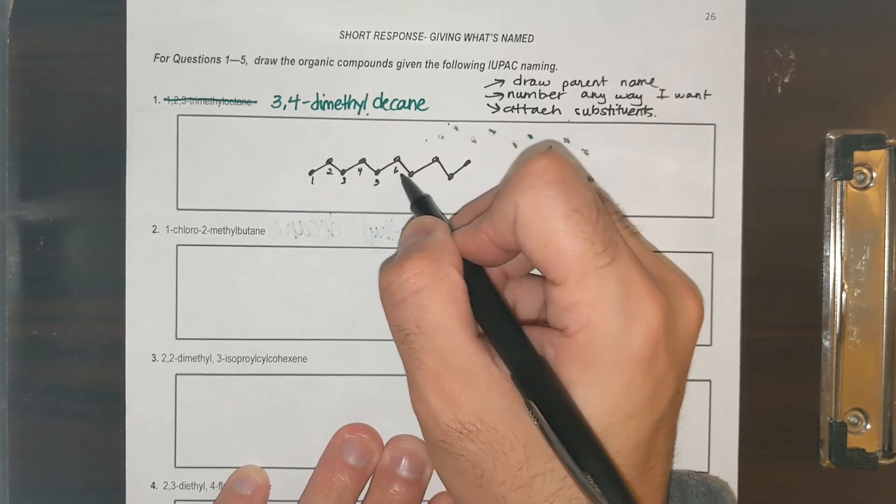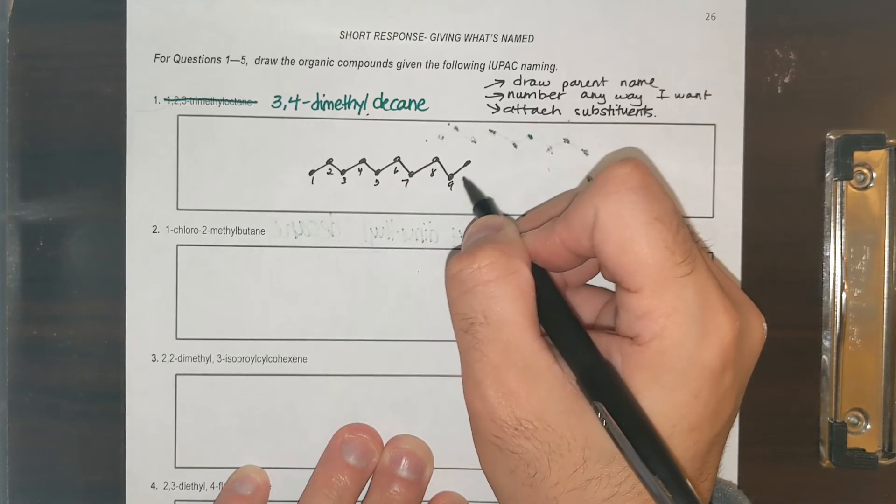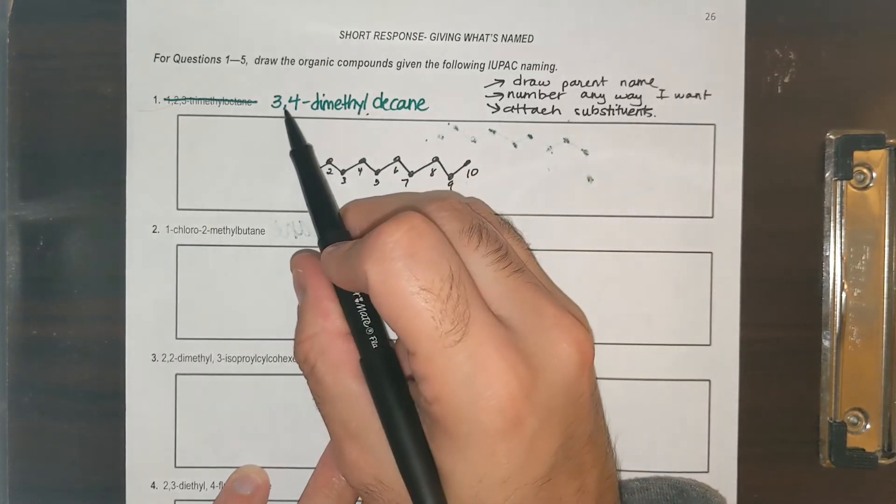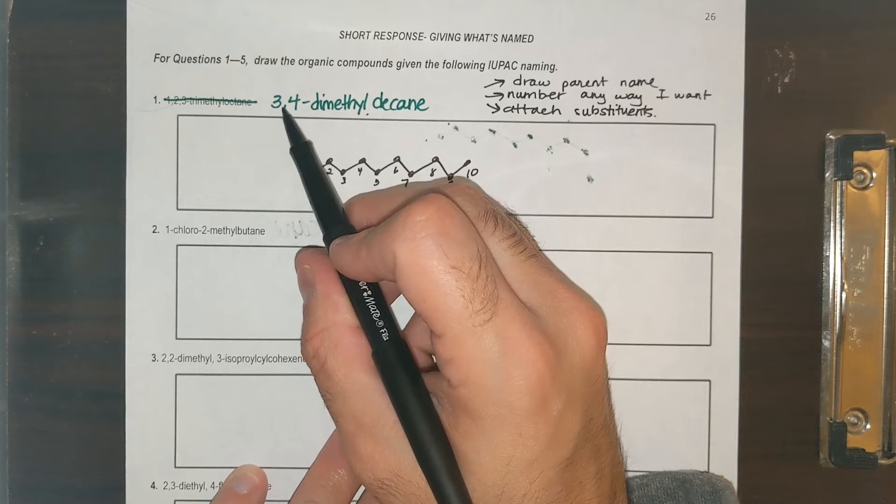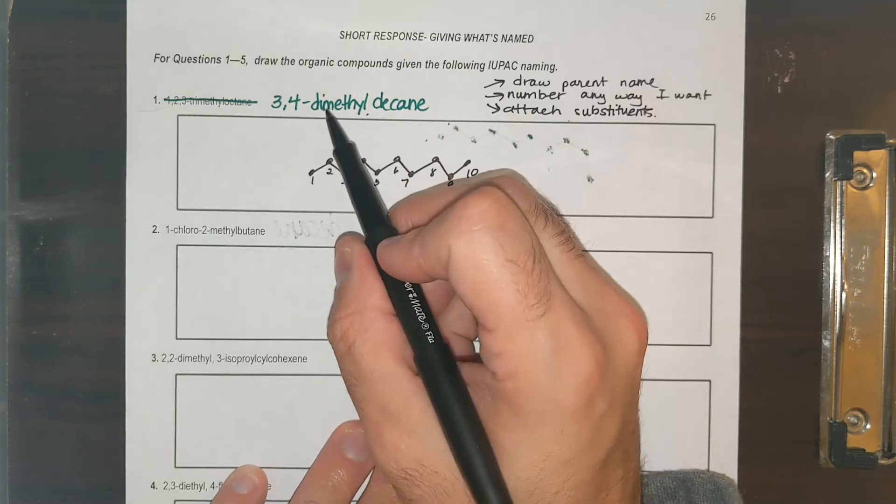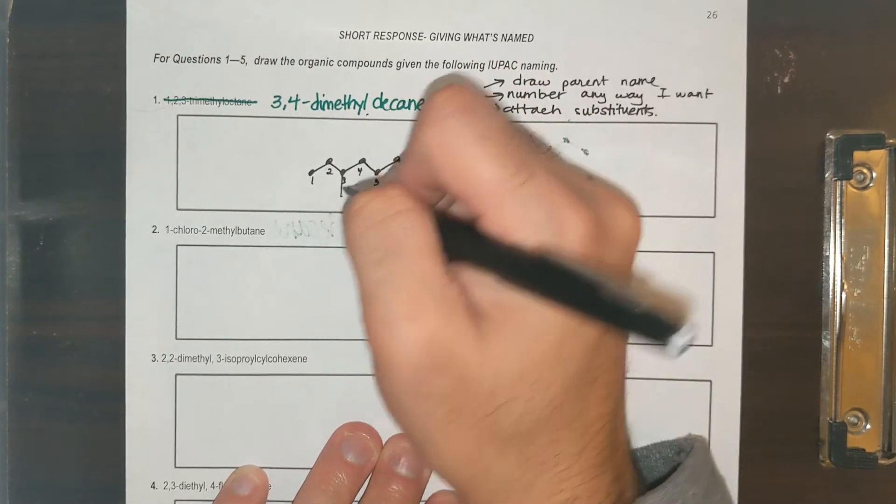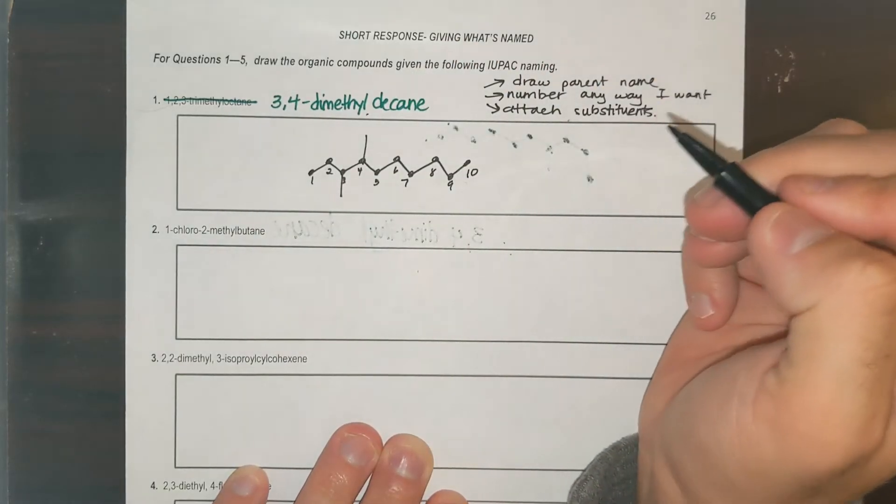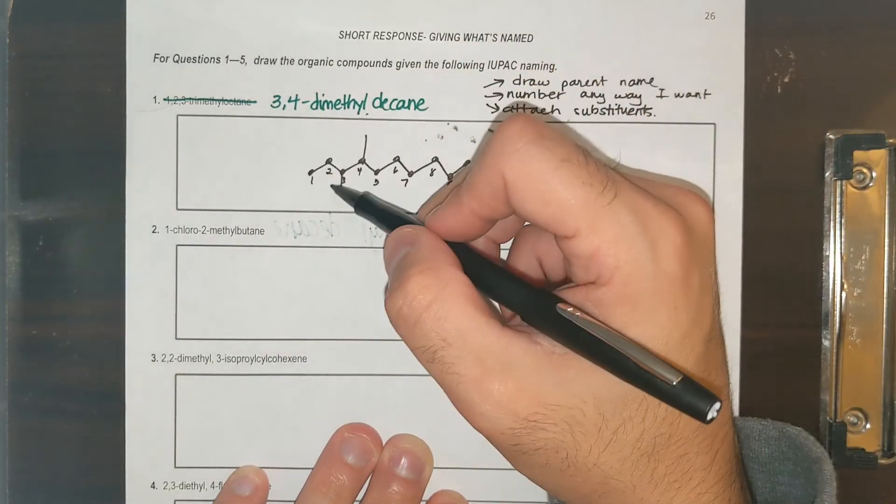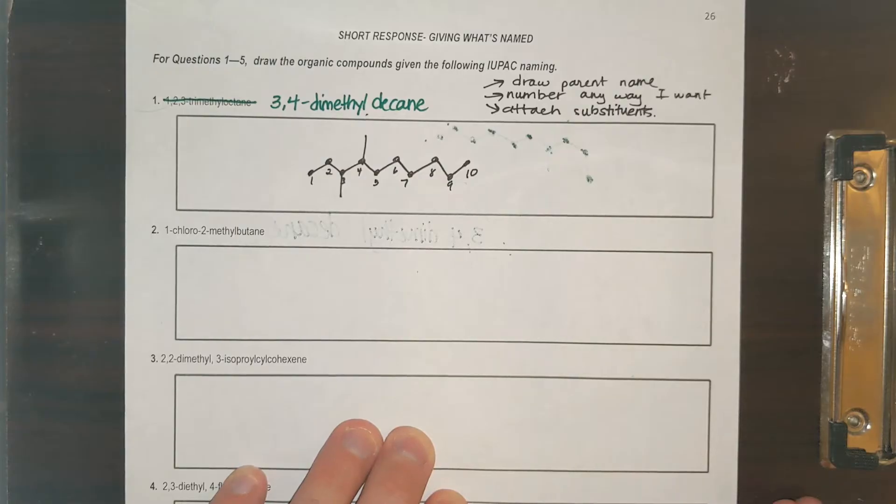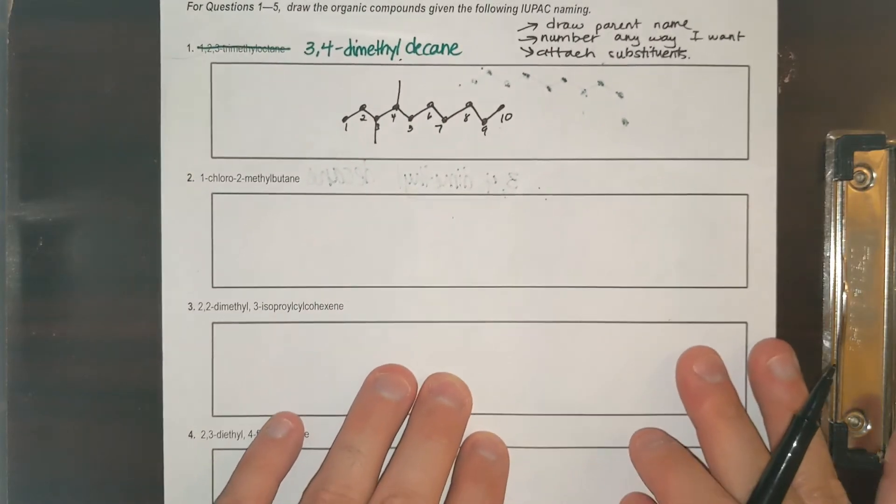And now I'll number it one through ten. And according to the naming, on the third and fourth carbons it says dimethyl. It means I have two methyls. So one here, one here, and we're done. This is 3,4-dimethyl decane. Not too bad. Let's do number two.